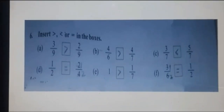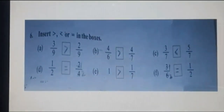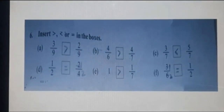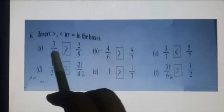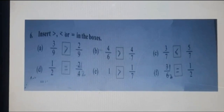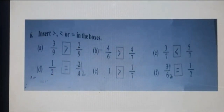Question number 6: insert greater, less, or equal signs in the boxes. Part A: 3 upon 9 vs. 2 upon 9. Denominators are the same, so when denominators are the same, the fraction with the greater numerator is the greater fraction. So 3 upon 9 is greater than 2 upon 9.